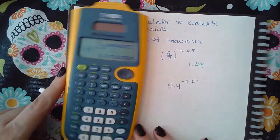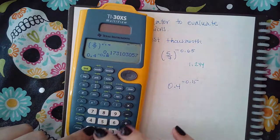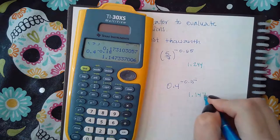And then the last one: 0.4 raised to the negative 0.15, and we get... Now if you're using any other kind of calculator...